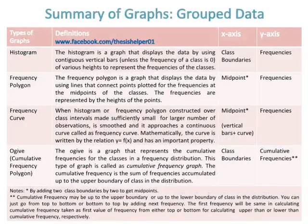Summary of graphs for grouped data. The histogram is a graph that displays data by using contiguous vertical bars of various heights to represent the frequencies of the classes. Class boundaries are taken on the x-axis while frequencies are taken on the y-axis.